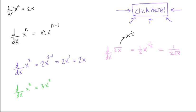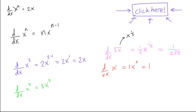Now what if we had d/dx of just x? I want to find out what the derivative of x is. So this is x to the power of 1. We bring the 1 down and get 1 times x to the power of 1 minus 1, which is x to the power of 0. And anything to the power of 0 is 1, so we get 1 times 1, which is equal to 1.